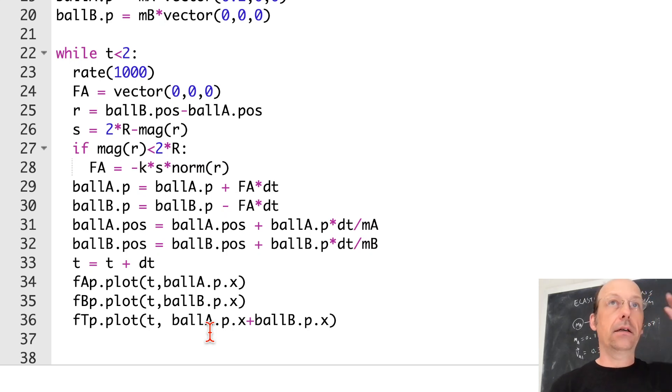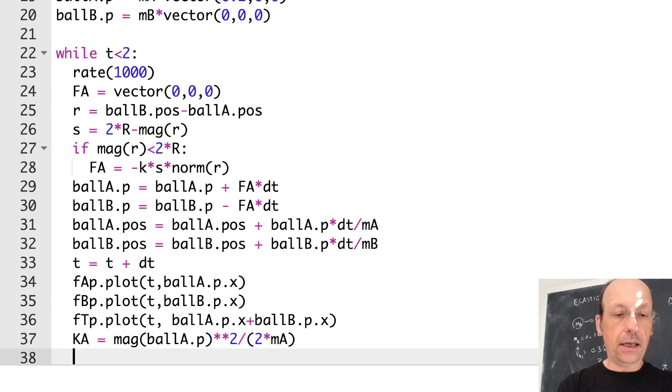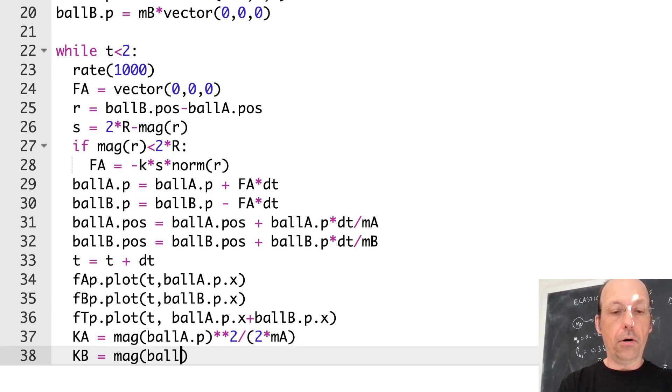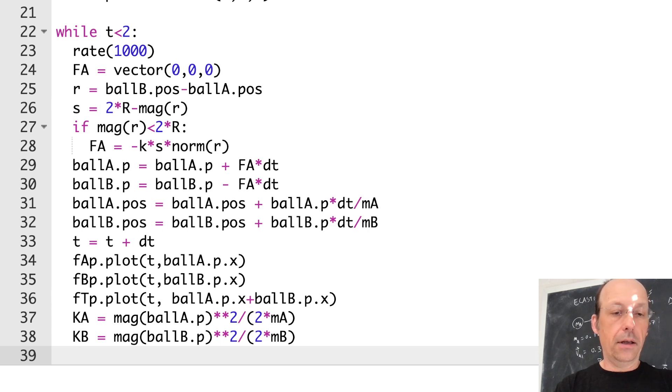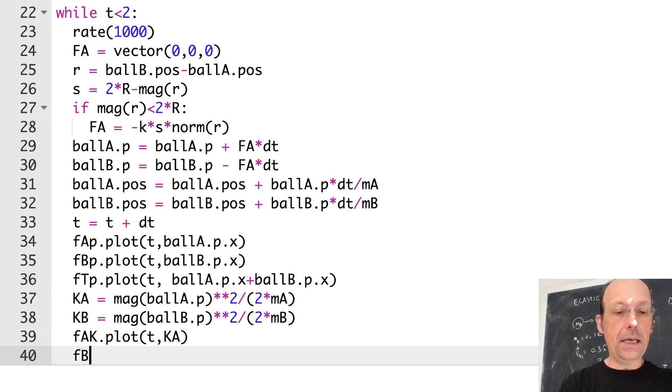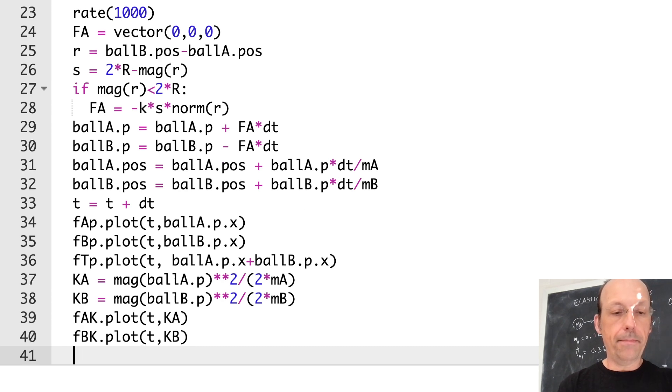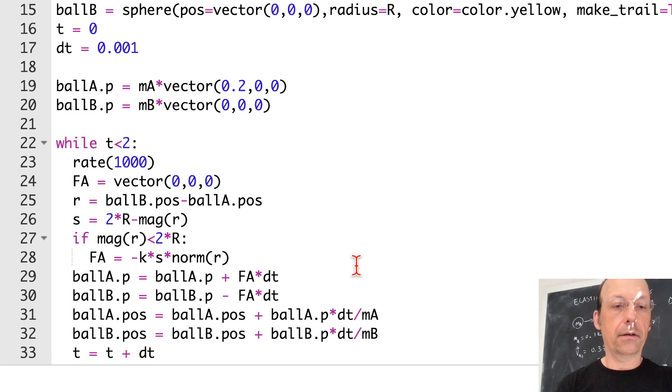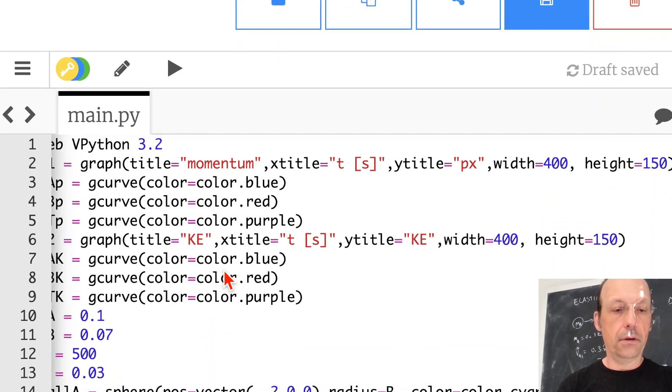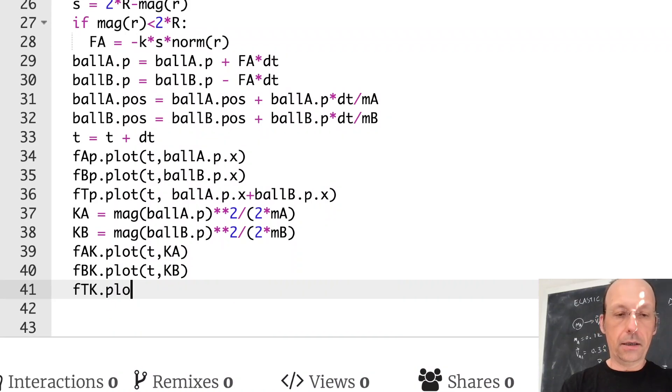So I need to calculate the kinetic energies. One way you can do that is momentum squared over twice the mass. It's the same as one half mv squared. So let's calculate the kinetic energies. KA is going to be mag ball A dot P squared divided by 2 times MA. And then I can plot it. F A K dot plot T KA. F B K dot plot T KB. And then F T K dot plot T KA plus KB. Let's run it.